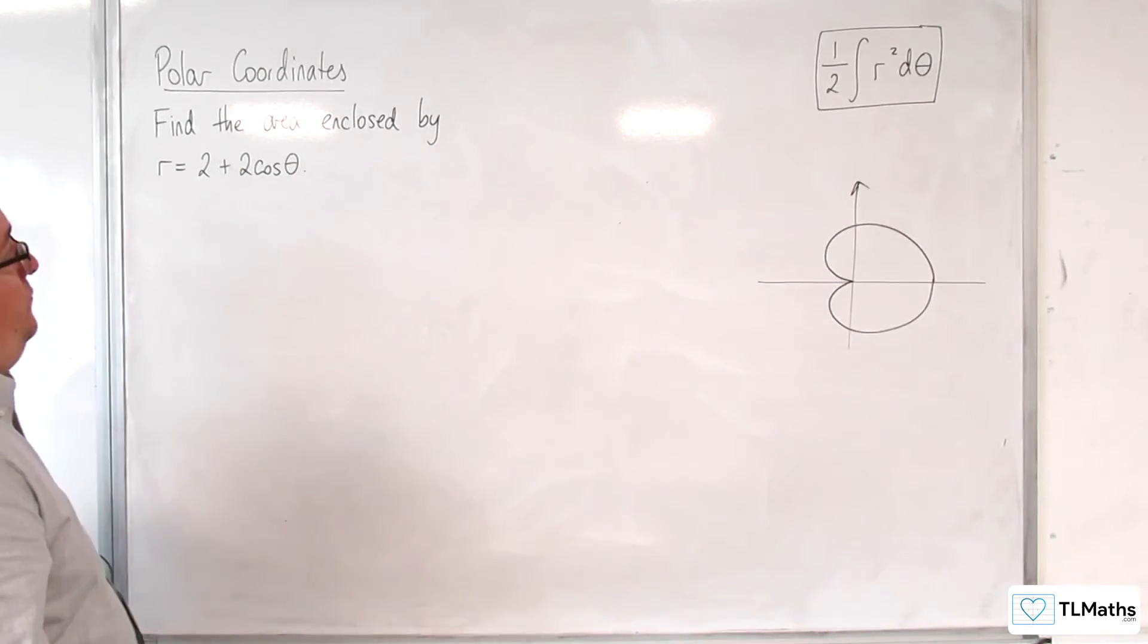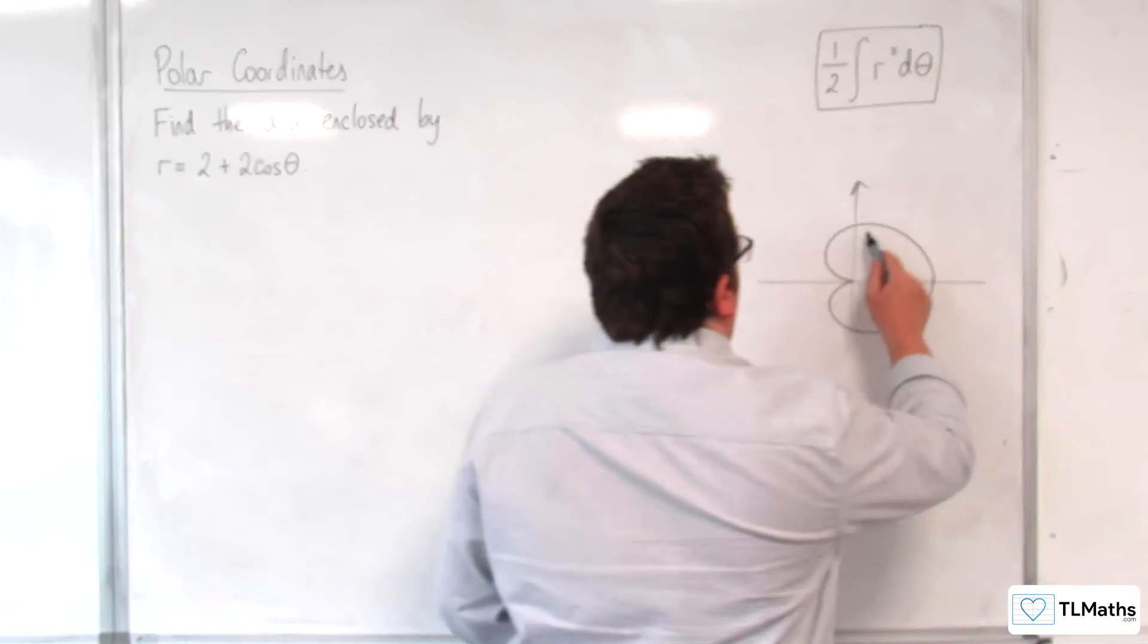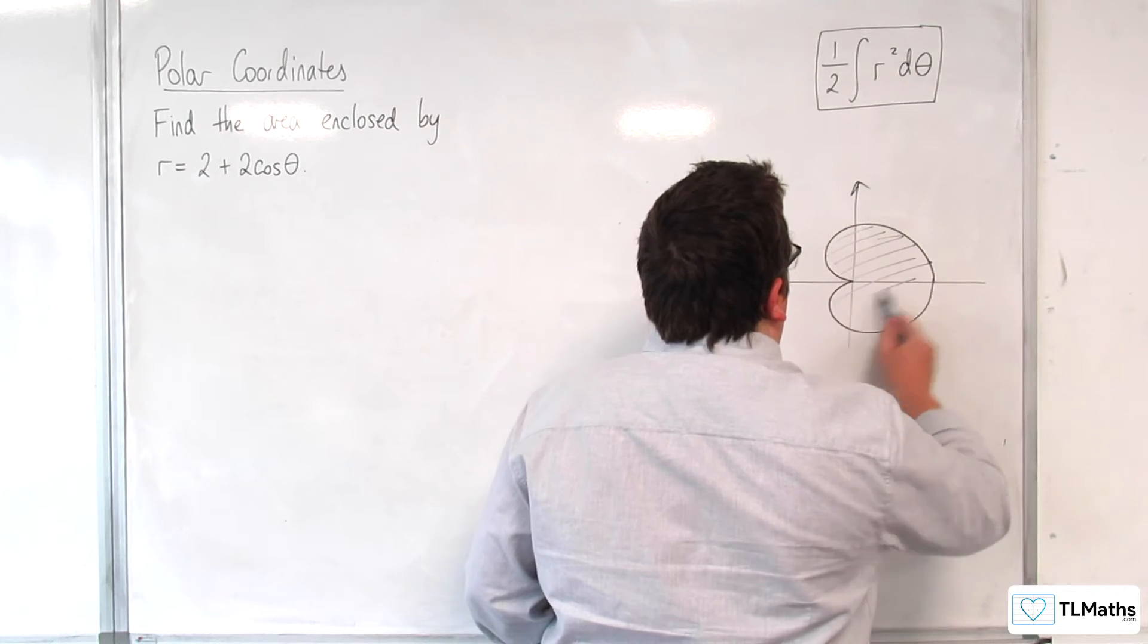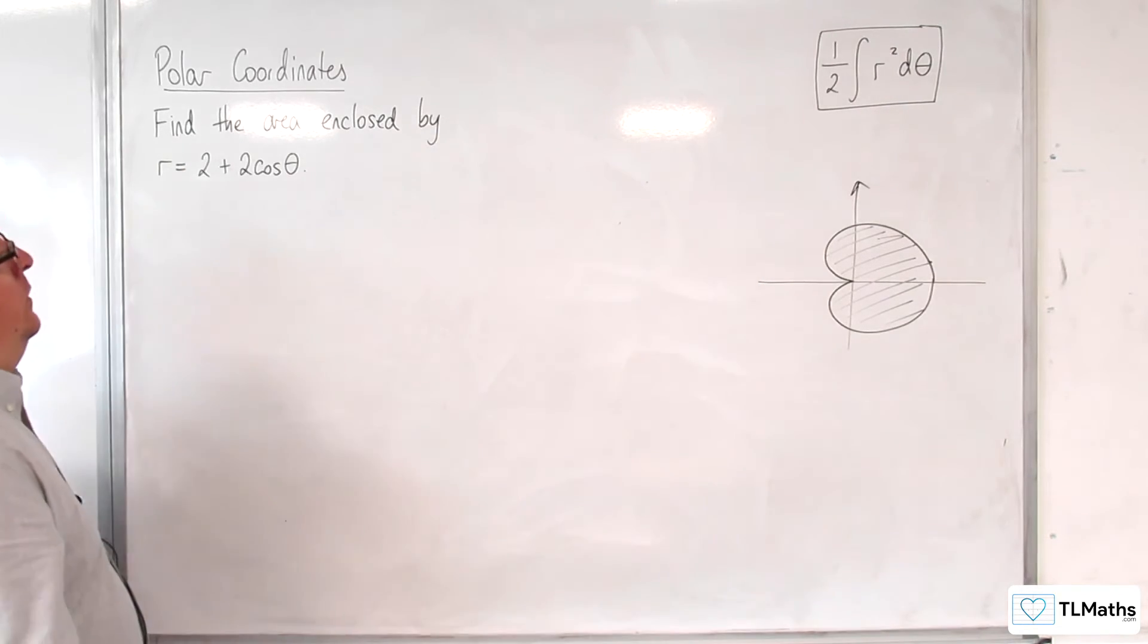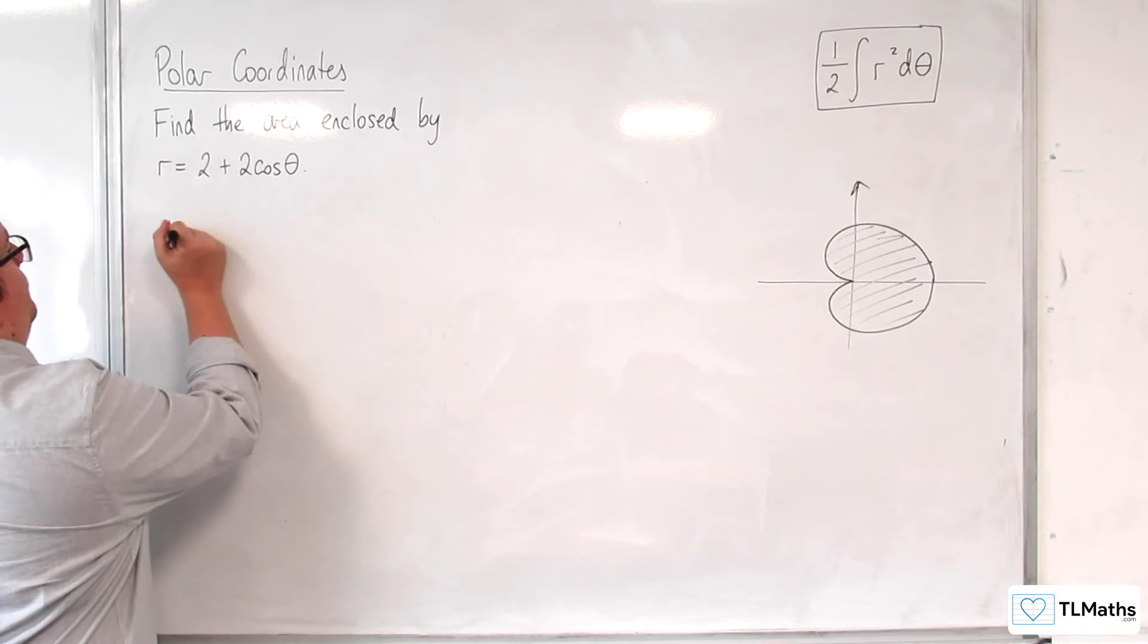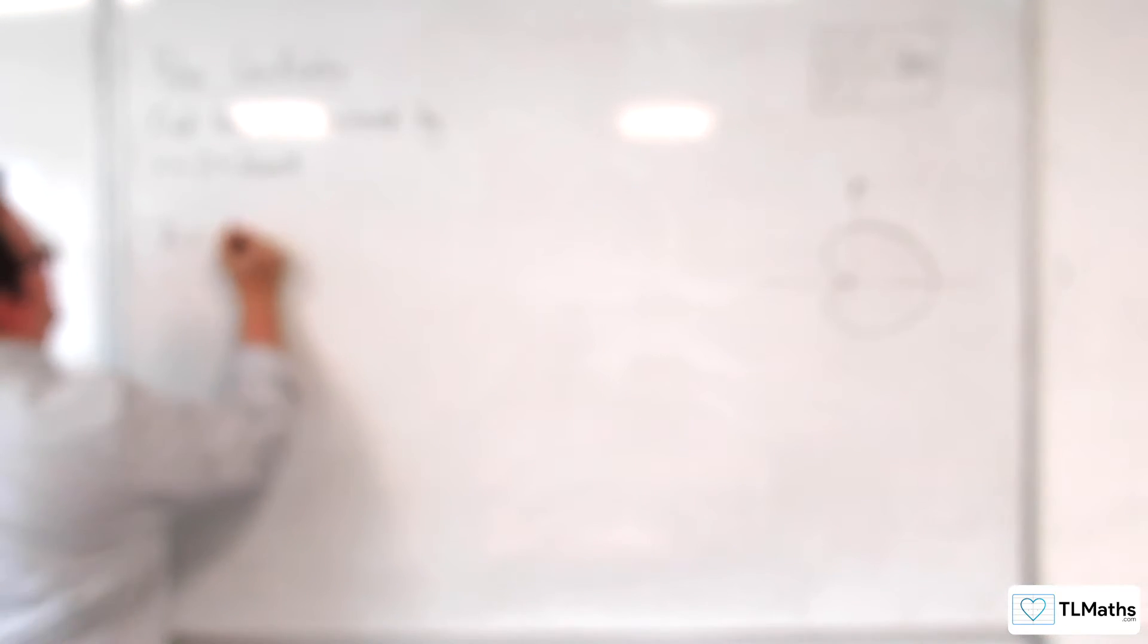So we're going to try and find the area inside. The area will be equal to 1 half times the integral between... Now we could go between minus pi and pi if we like.